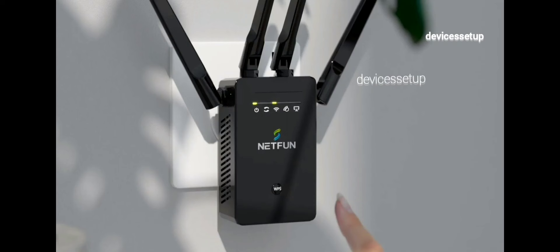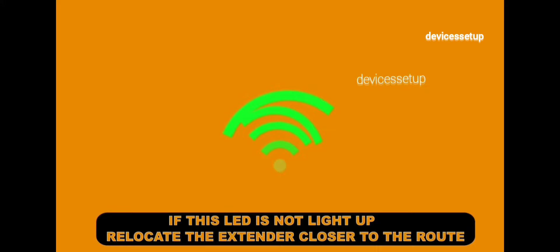Once WPS is enabled, you can press the WPS button on the router and on your phone or extender to make a connection between them. I hope you found this video useful — thank you so much.